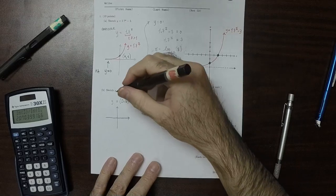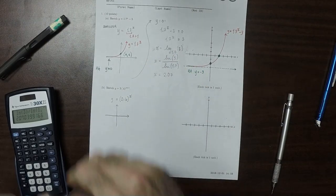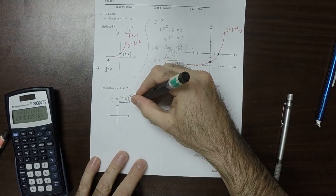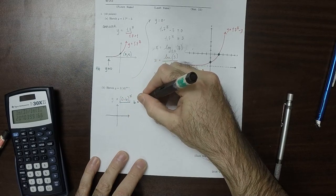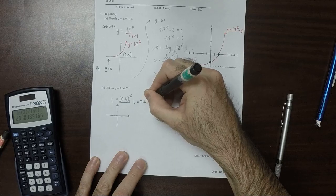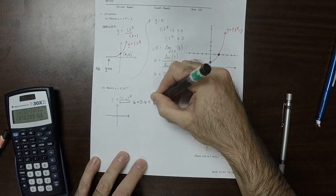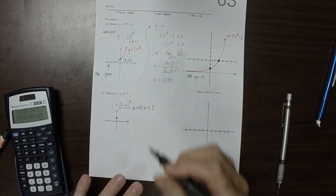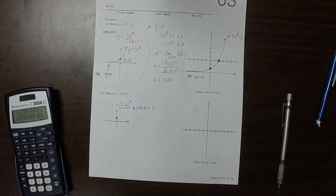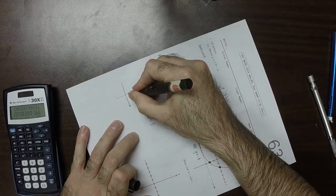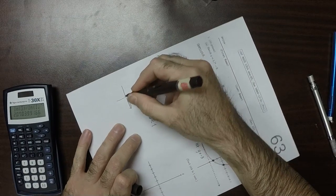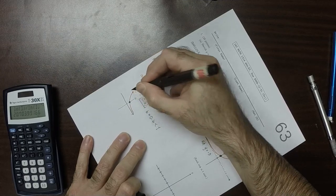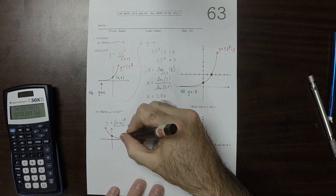So this is the base, here. So the base is 0.6, and that's less than 1, which means that this kind of exponential will decay as you go to the right. It will look like this. So it's decaying.